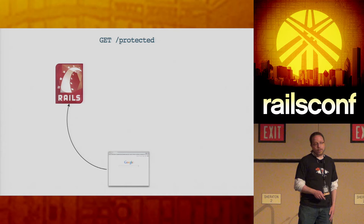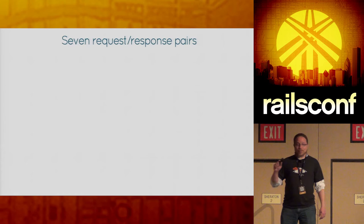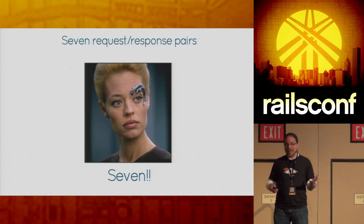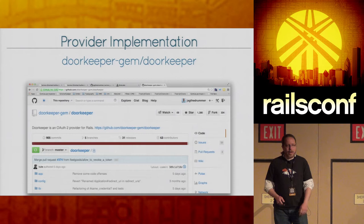The browser follows the redirect and finally we have the page the user wants to see. That was seven request-and-response pairs in a simplified version — and it kind of seems like a pain to implement all of this. But luckily we have RubyGems, which gives us a lot of gems that are going to make this easier.